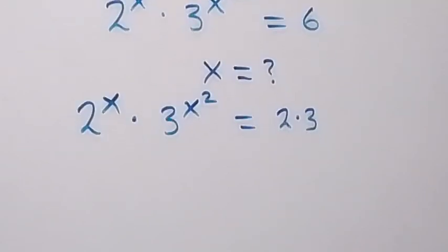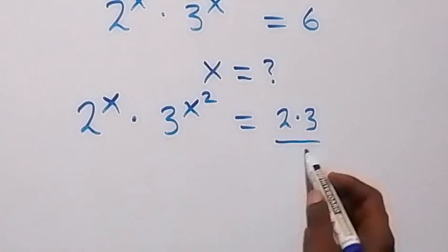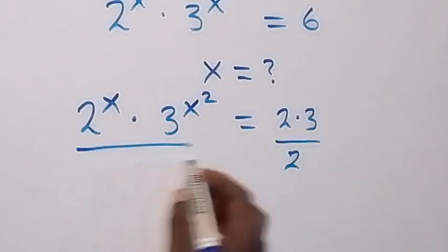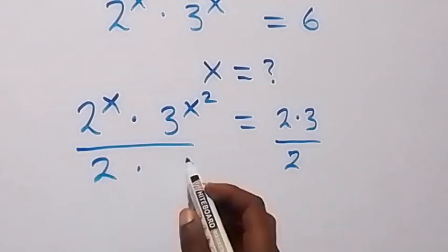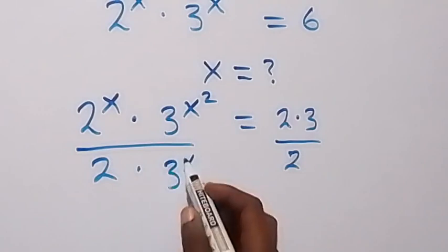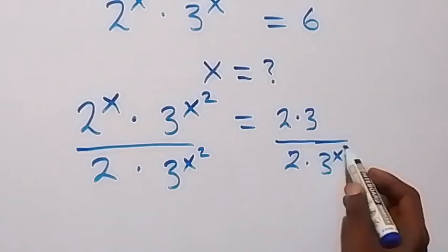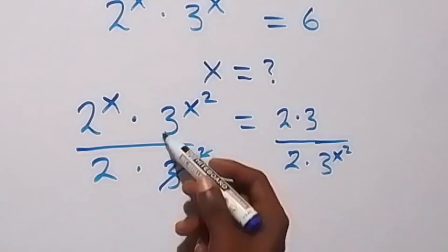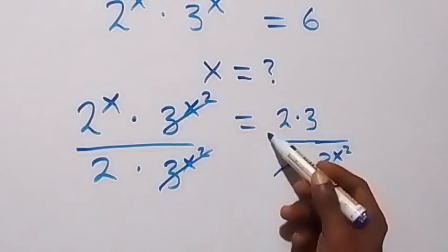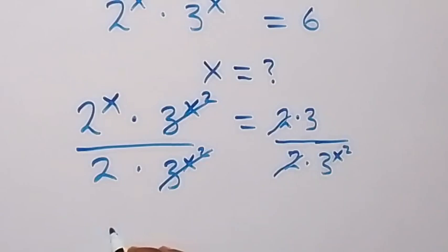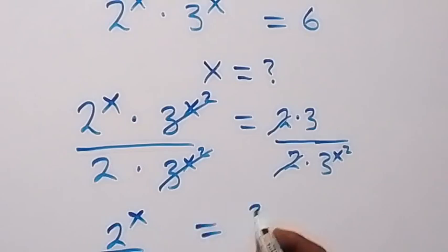Then from here, let's separate this into fractions. We divide this side by 2 and also this side by 2. We also divide this side by 3 raised to power x squared and also this side by 3 raised to power x squared. Here this cancels out, and 2 cancels here. What we are left with becomes 2 raised to power x over 2 equals 3 over 3 raised to power x squared.